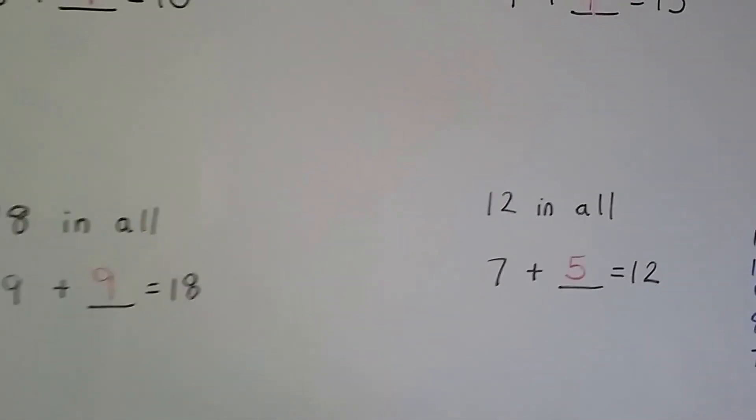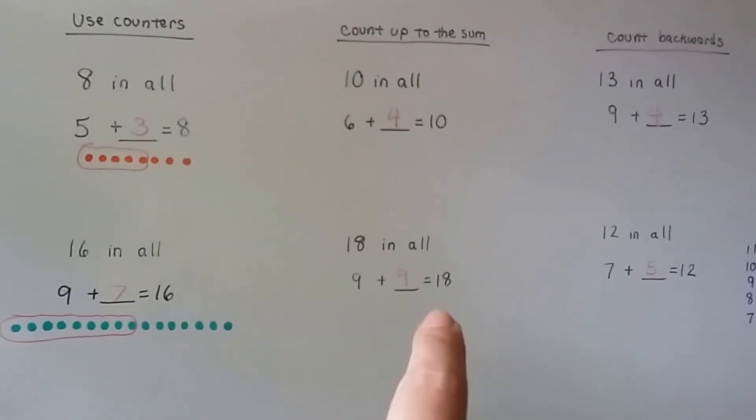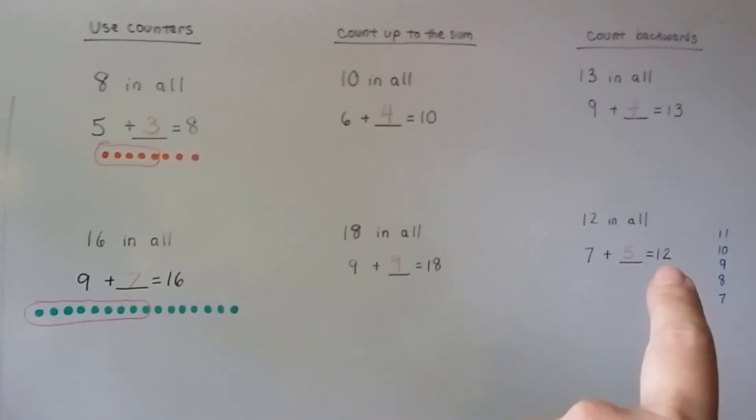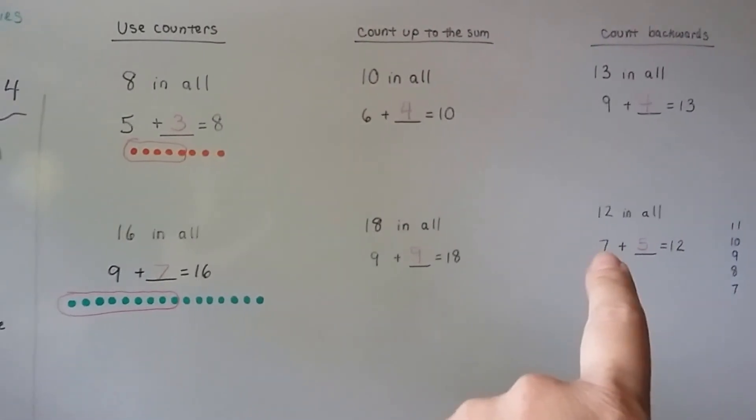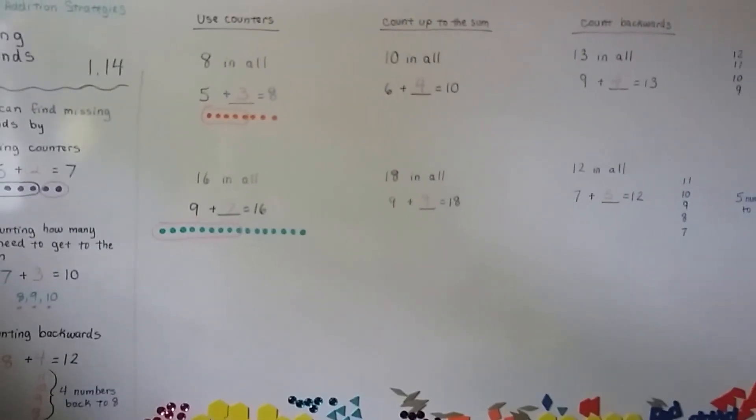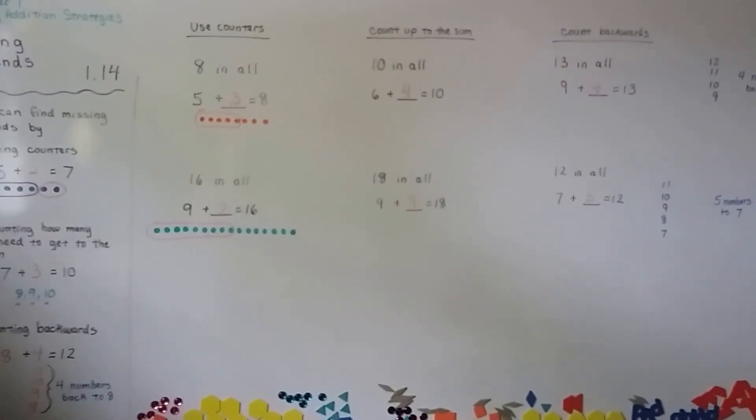So we can use counters. We can count from the addend and count up to the sum. Or we can count backwards and start from the sum and count to the addend to find missing addends. Keep up the good work and I'll see you next video.